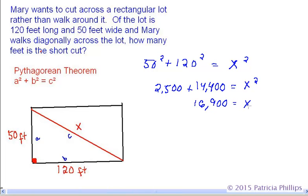Now, we don't have x yet. This all equals x squared. So we're going to have to use the calculator and the square root function to get the root of that. And our answer is going to be that x equals 130 feet. So, this shortcut over here would be, we're going to label it 130 feet.